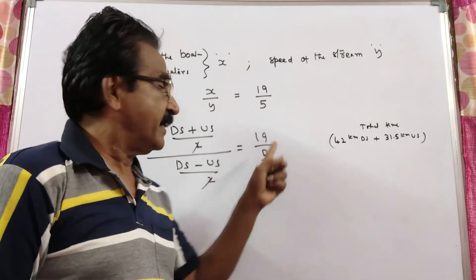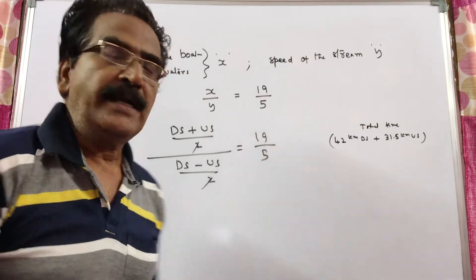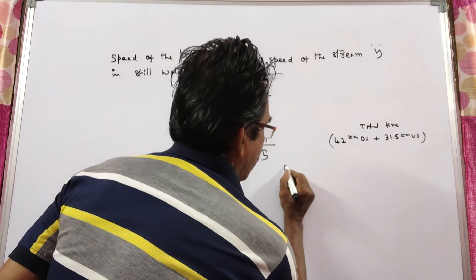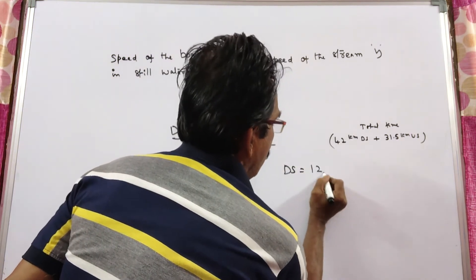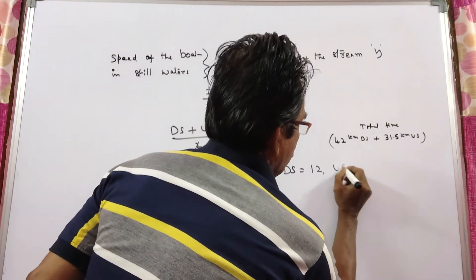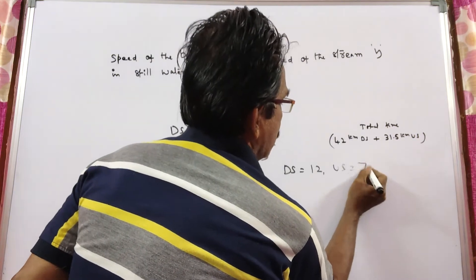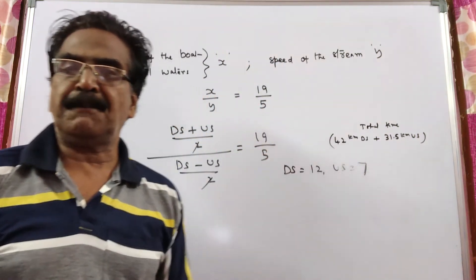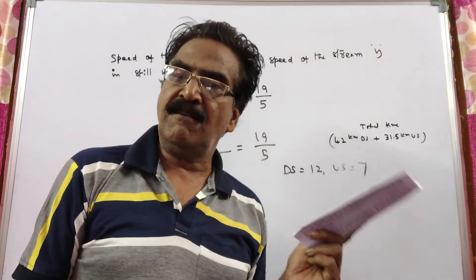Sum 19 difference 5. So, DS must be 12. And US must be 7. 12 plus 7, 19. 12 minus 7, 5.